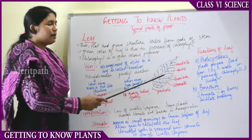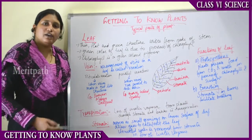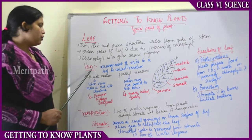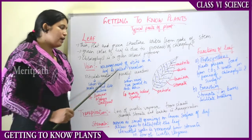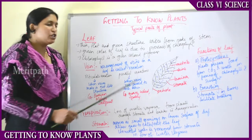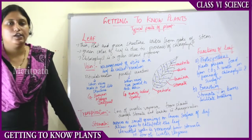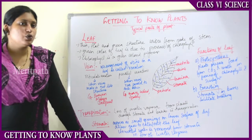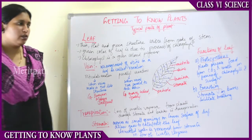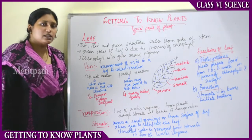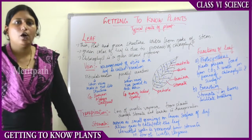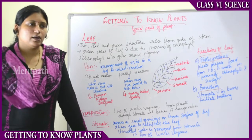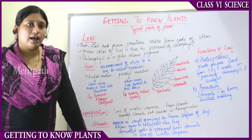The veins on a leaf may appear differently for every different plant. The arrangement of veins on the leaf is known as venation. Venation can be of two types: reticulate venation or parallel venation.